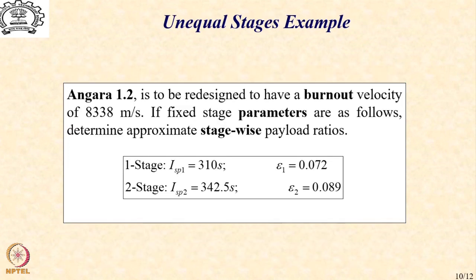Let us now do the same exercise for unequal stages. So, we have the problem of Angara 1.2 and let us redesign this to have a burnout velocity of 8338. If the fixed parameters, so it is a velocity constraint problem. Let us determine the approximate stage wise payload ratios.